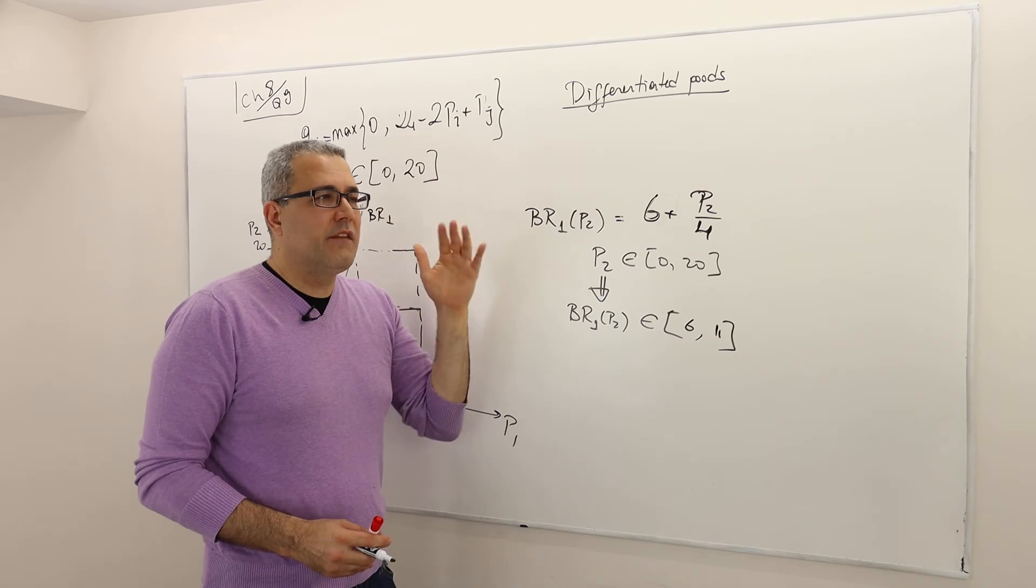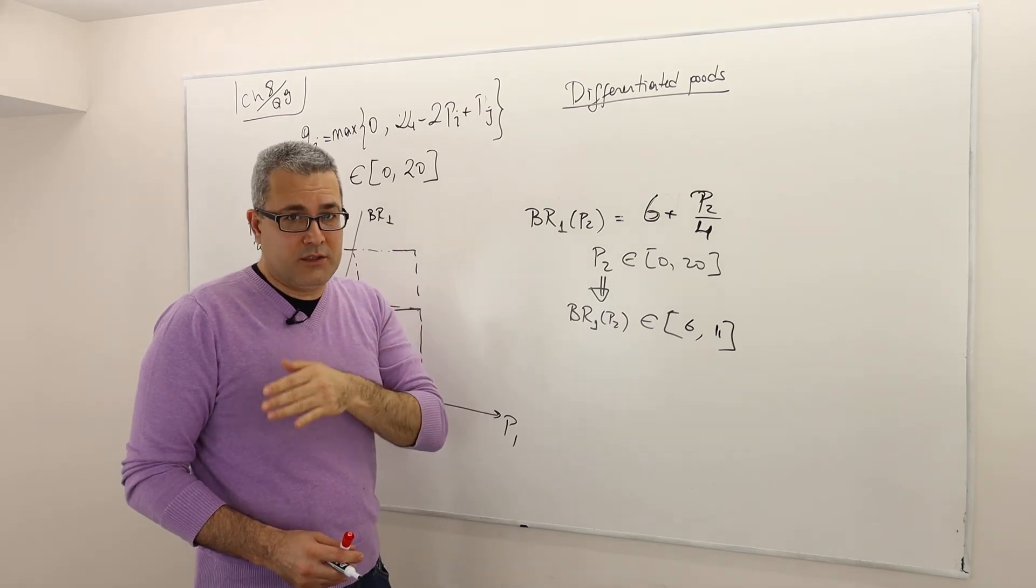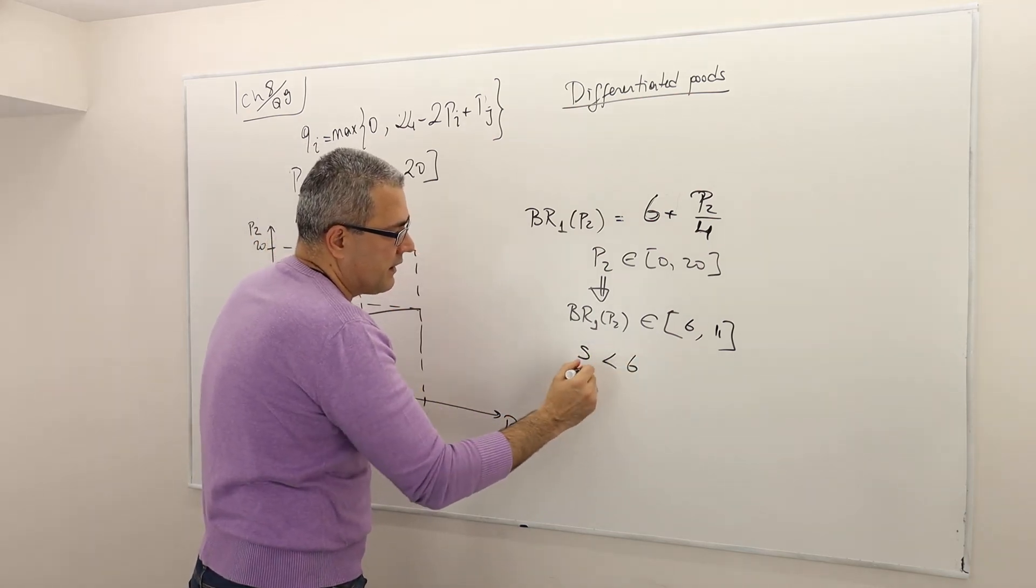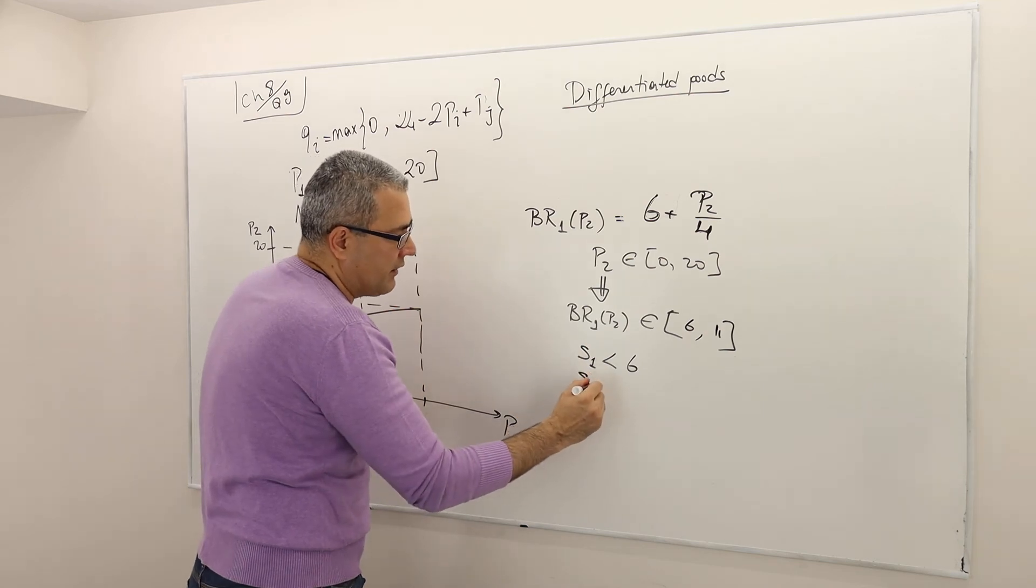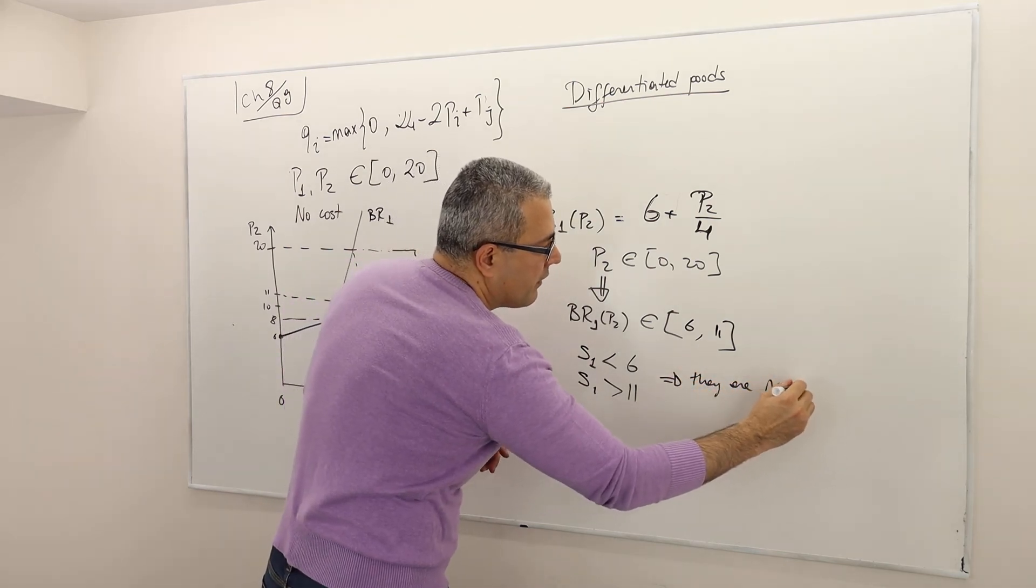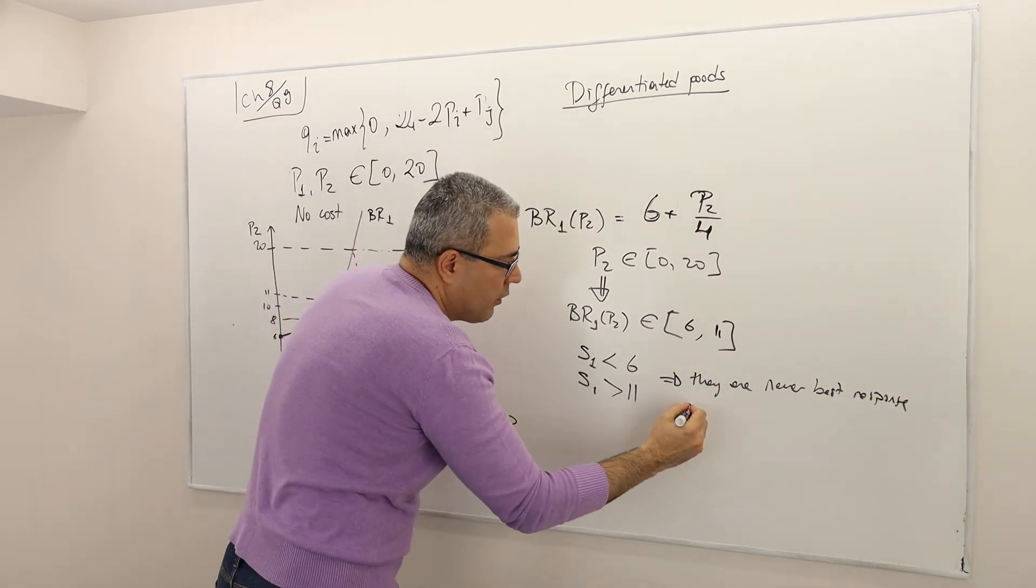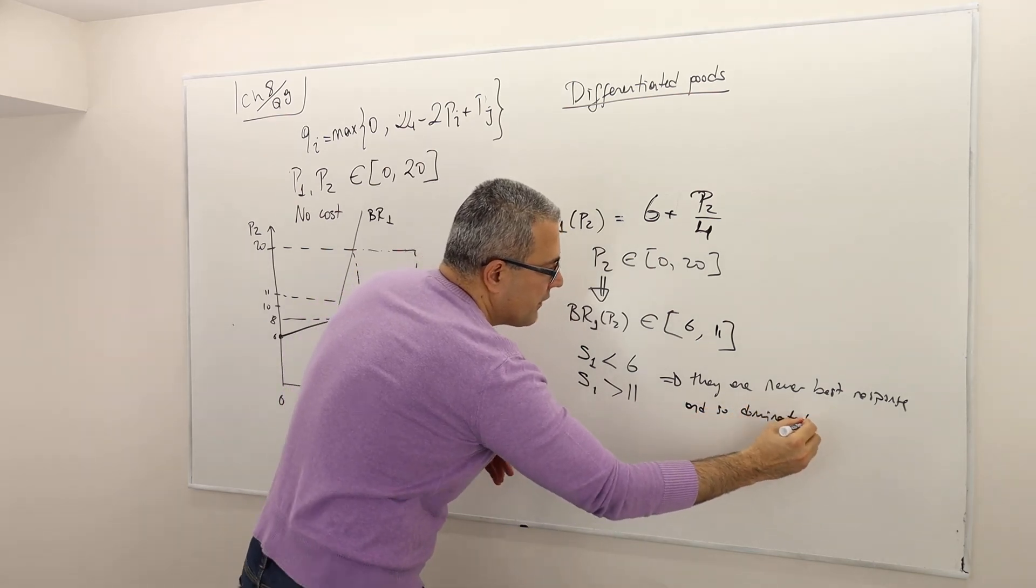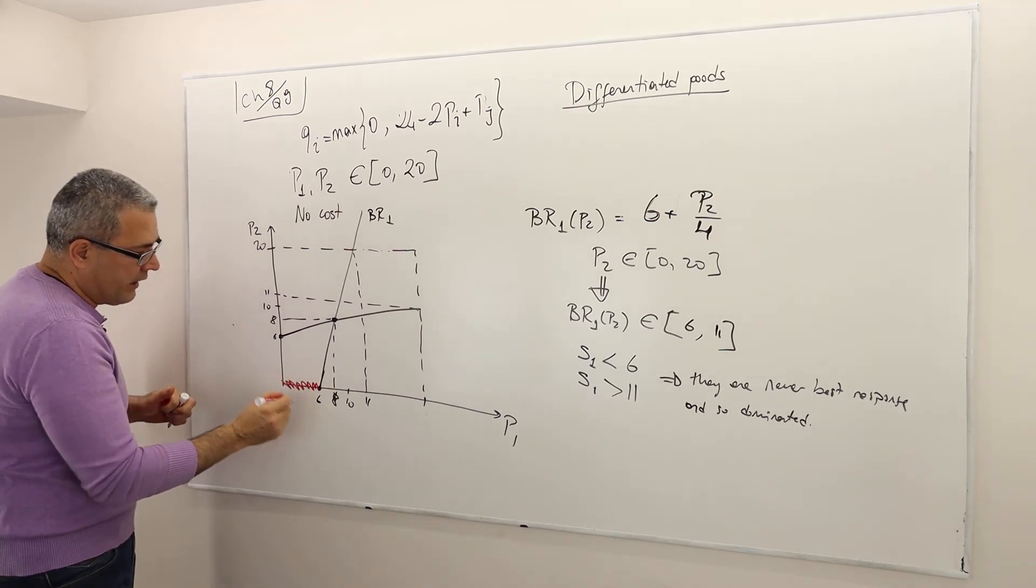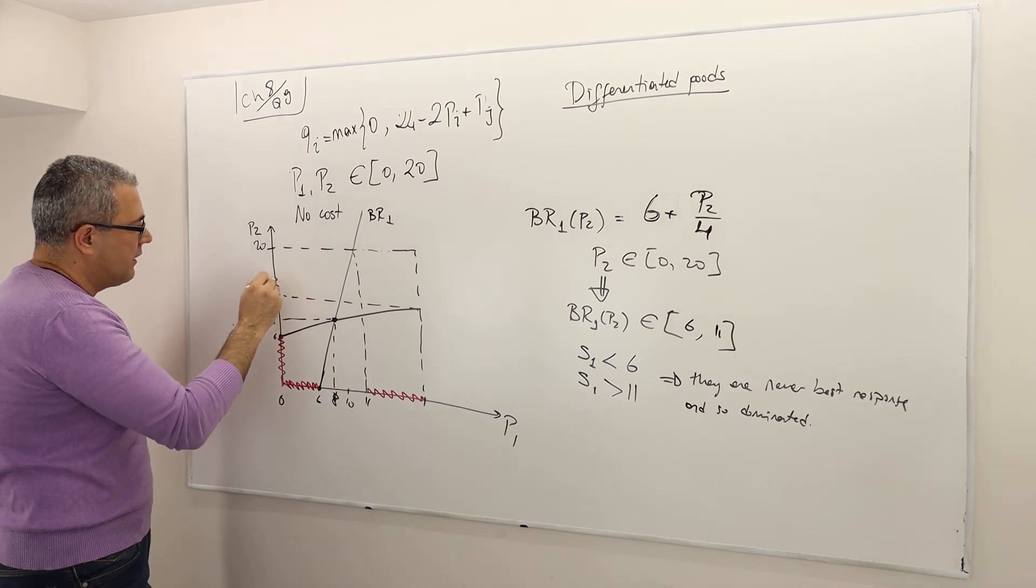And hence, remember the result we had, if a strategy in a two-player game, if a strategy is never a best response, it means it's a strictly dominated strategy. Hence, for that reason, the strategies less than 6, s1, let's call it, and the strategies greater than 11, they are never best response, simply because the best response has to be in this range. And so, dominated, as simple as this. If you like, you can use the rectangle indicating that those strategies are never best response, and dominated, same for this guy, the second guy.